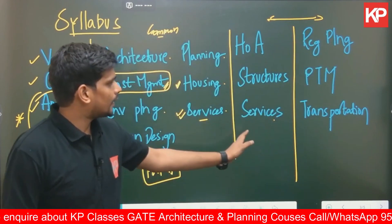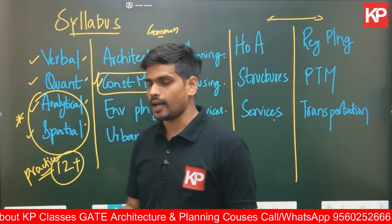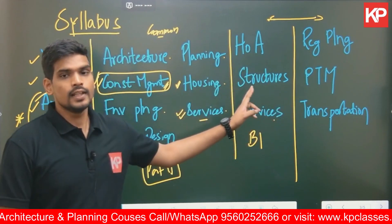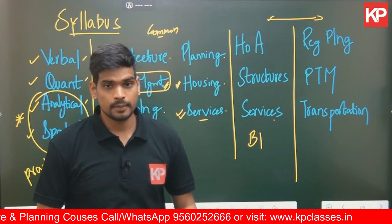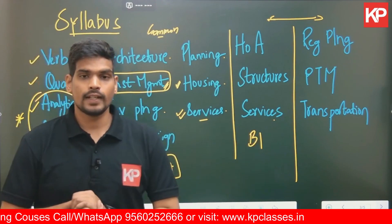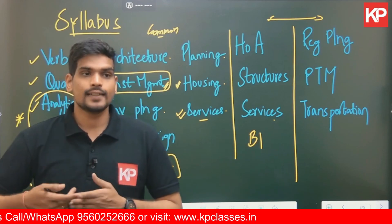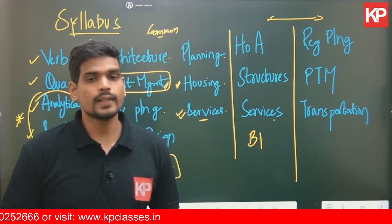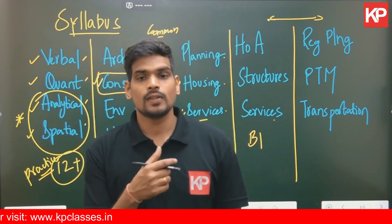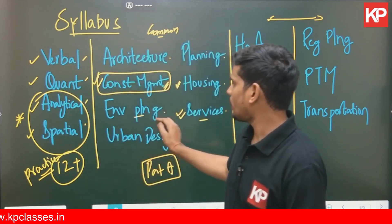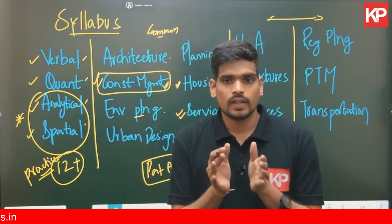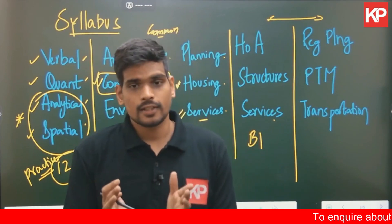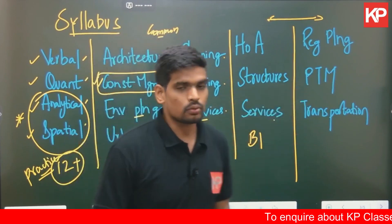Moving to Part B — that is the architecture part. Part B1 has three sections: B1.1 covers history of architecture and contemporary architecture; B1.2 covers structures and building construction and building materials; B1.3 covers building services, including lighting, acoustics, and climatology. Note that some portions of climatology, like climate responsive design, also appear in the common part under environmental planning, so the boundaries between sections are not always rigid.